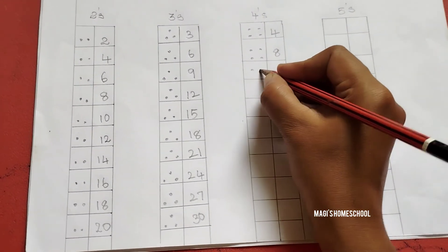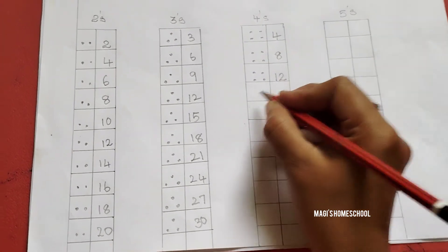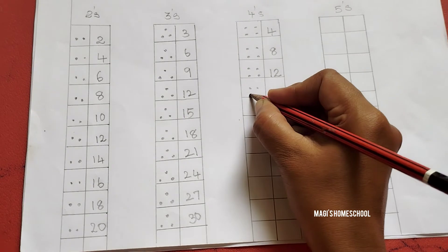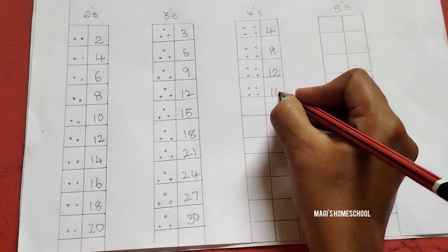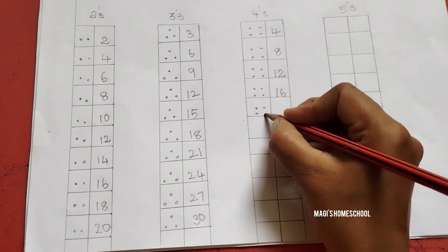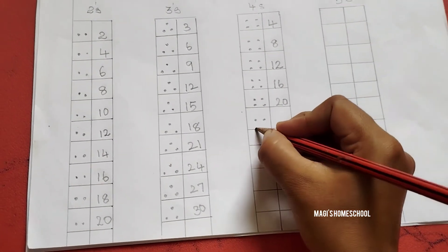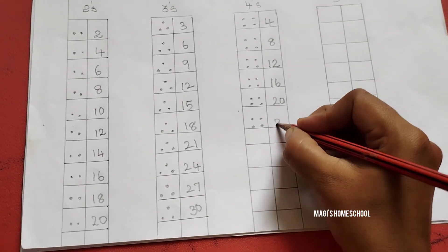9, 10, 11, 12. Now write 12. 13, 14, 15, 16. Write 16. 17, 18, 19, 20. Write 20. 21, 22, 23, 24. Write 24.